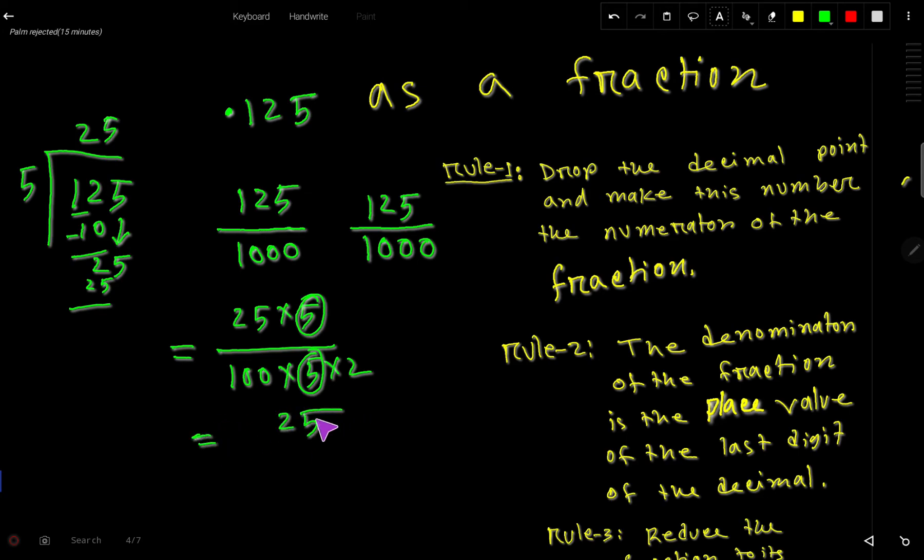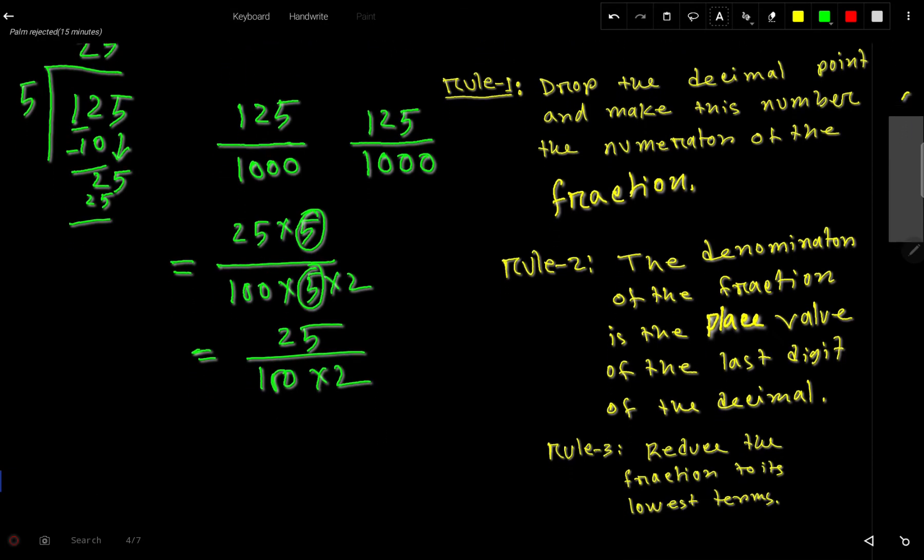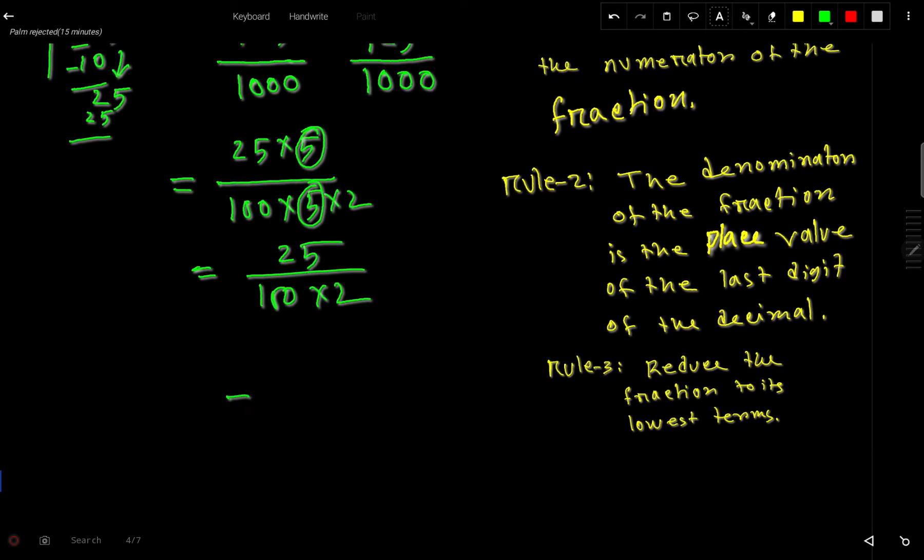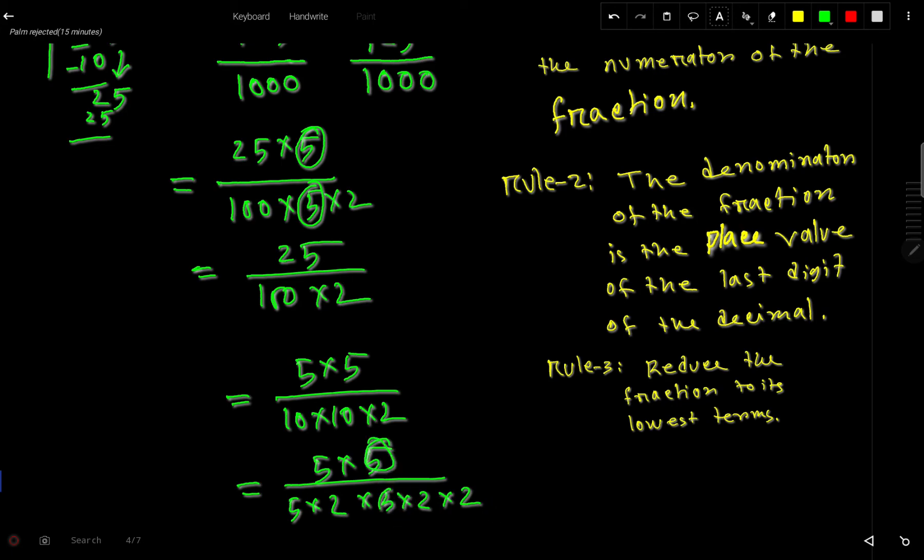We get 25 divided by 100 times 2. Now we split 25 as 5 times 5. We can write 100 as 10 times 10, and split each 10 as 5 times 2. Cancel the 5s.